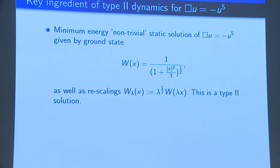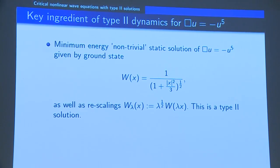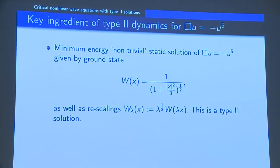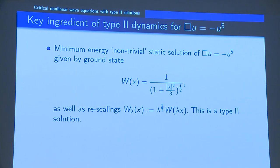Now let's approach these type 2 dynamics. As we know from work of the 80s and geometric works, people have long known that there are static solutions w(x), finite energy, time-independent solutions of the corresponding elliptic problem: Δu is minus u to the 5.